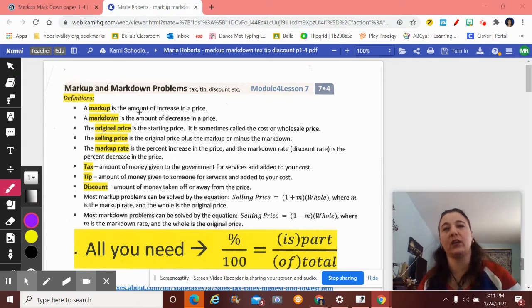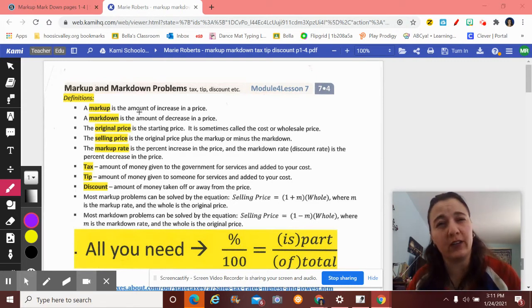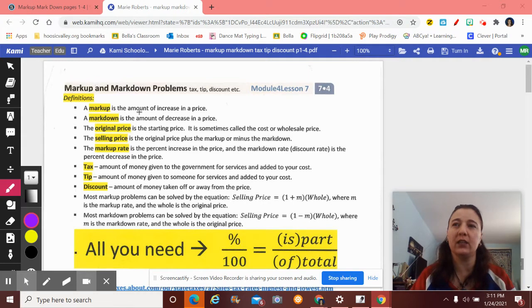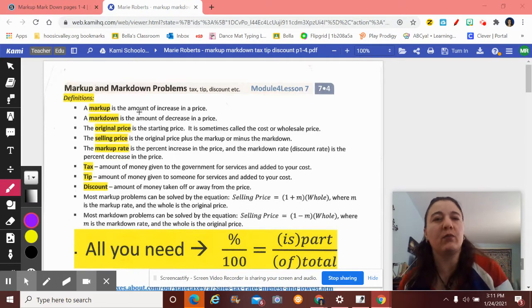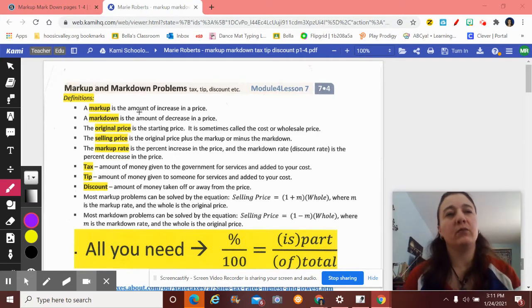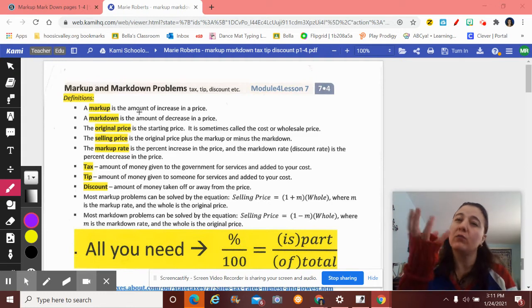The original price, original is something you start at. A lot of times that's called the wholesale price. That's why they call that BJ's Wholesale Club, because they're giving you more of the original price and not the usual marked up price that most retail stores do. Because the more people involved, the more people that need to get paid. The less people involved, the less money it should cost.